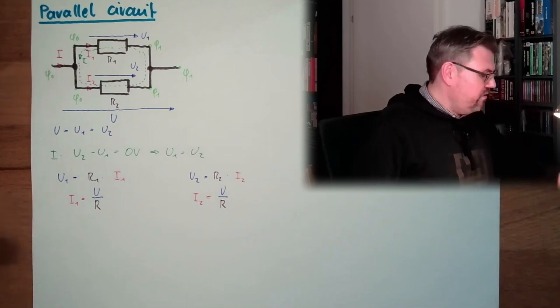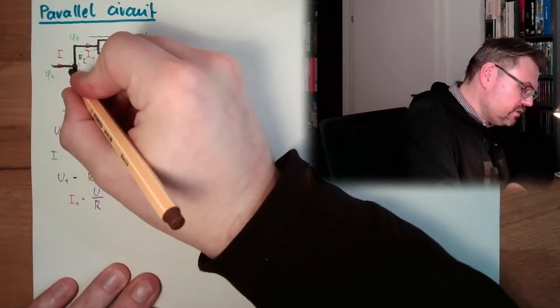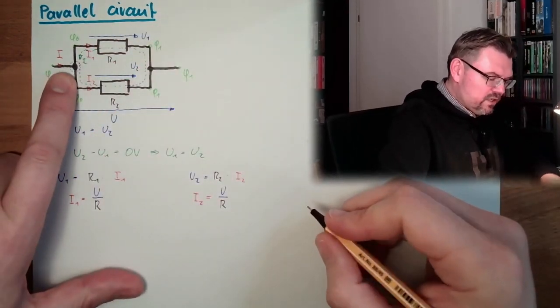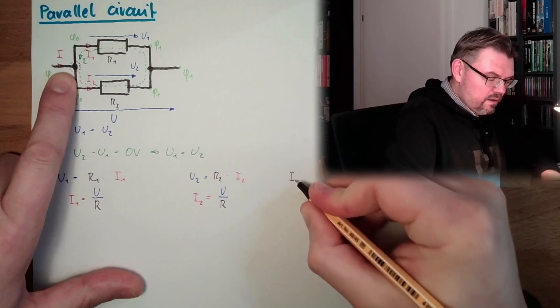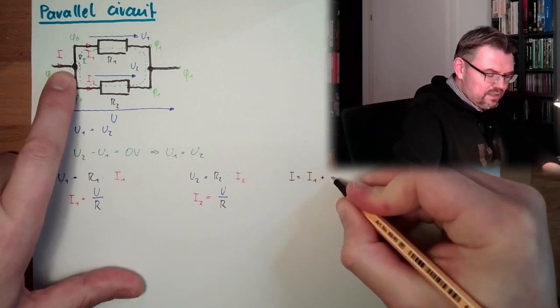And now, let's have a look at this junction, at this node here. At this node, we see what is going in, I equals what is going up, I1 plus I2.